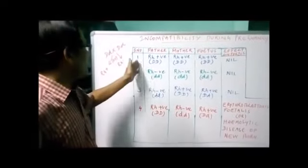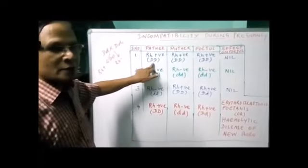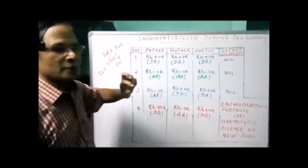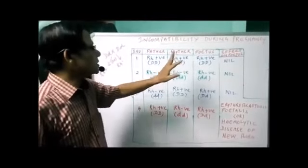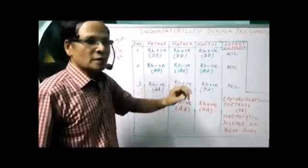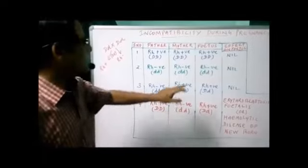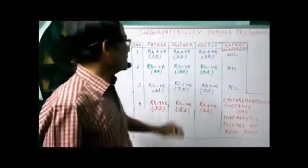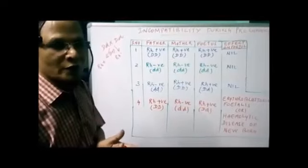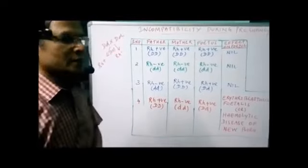Now I am taking marriage number one. Here father is Rh positive — homozygous — with capital D dominant gene. And mother is also Rh positive, as a dominant trait. The fetus, the embryo, the child which is going to be born, is also Rh positive. So in this marriage, if both are positive, there is no effect on the fetus. The child will be delivered normally in any number of pregnancies.